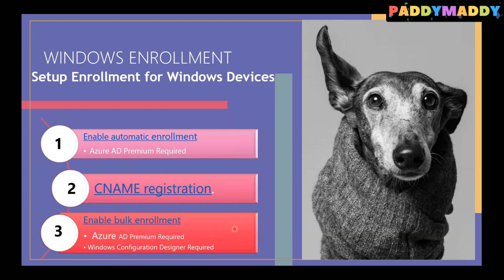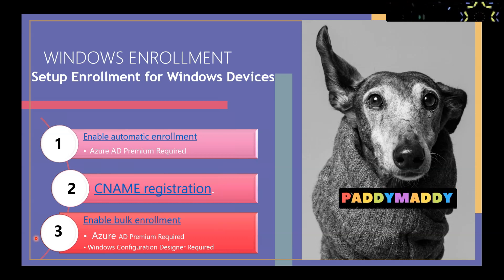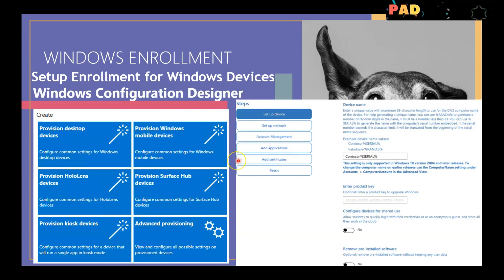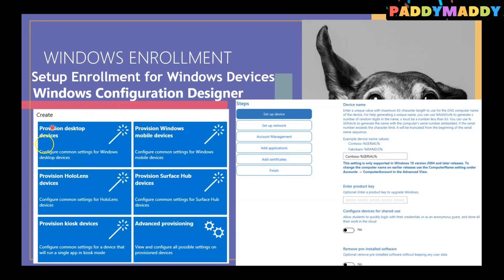How does the tool look and where can you get it? This tool is available in the Microsoft Store - you can download it for free. When you open it, it runs a wizard. You can create a provisioning desktop, provisioning Windows Mobile Devices, Surface Hub, HoloLens, or Kiosk Devices, and advanced provisioning with a lot of manual configuration.